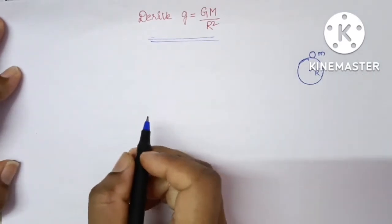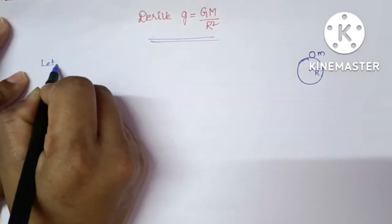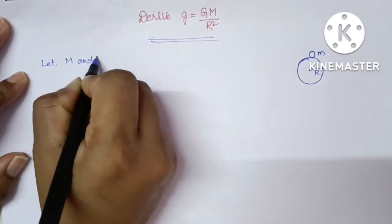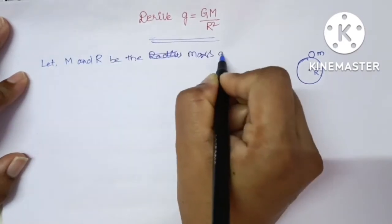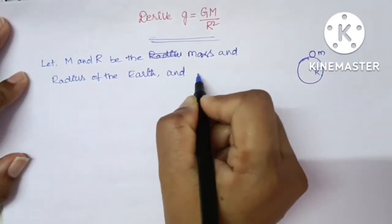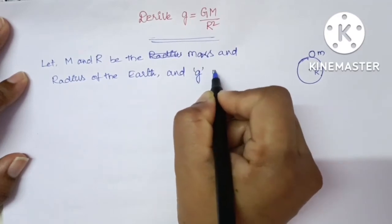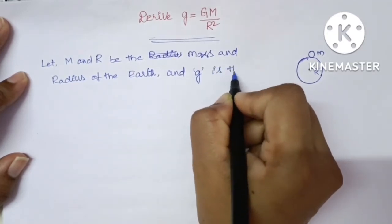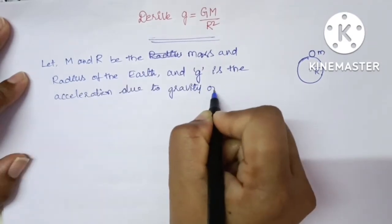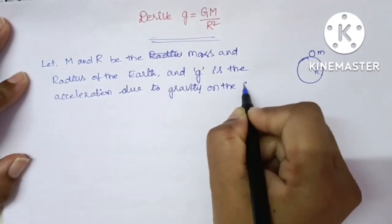Let us write this in words. Let M and R be the mass and radius of the Earth, and g is the acceleration due to gravity on the surface of the Earth.